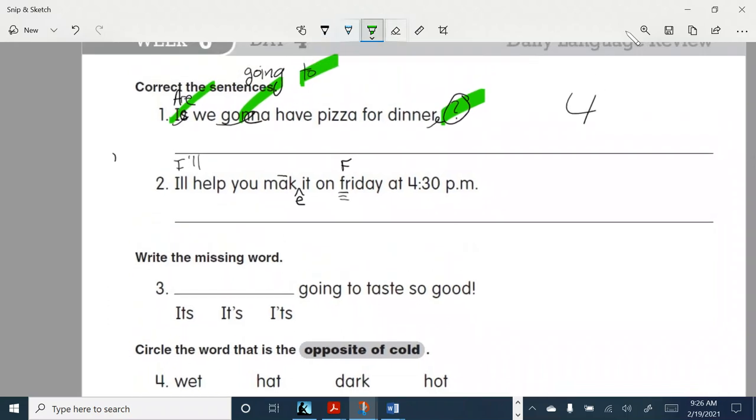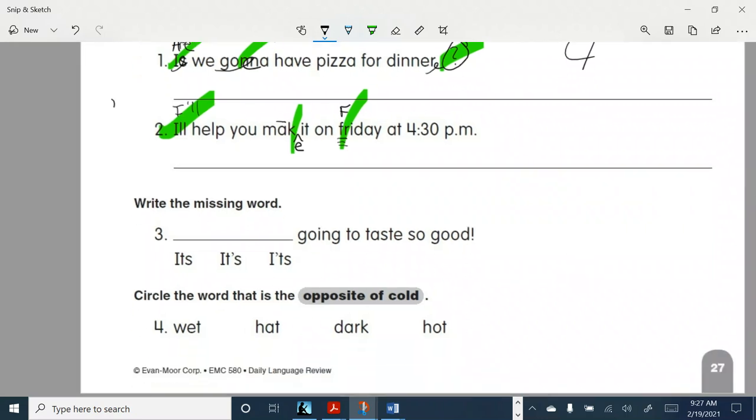All right. So we have how many here? We have 1, 2, 3. Take a look, you guys. Write the missing word. We need to put... It's going to taste so good. So we need it is. So which one would be the proper way to say... Yes. In the middle. It's going to taste so good.